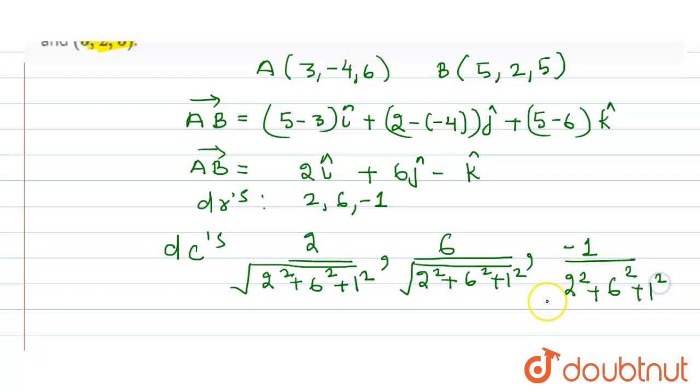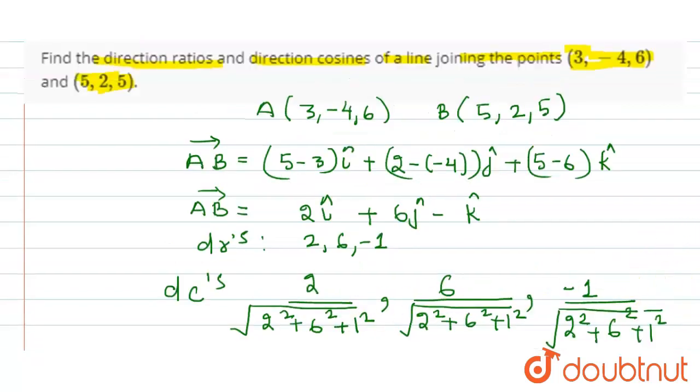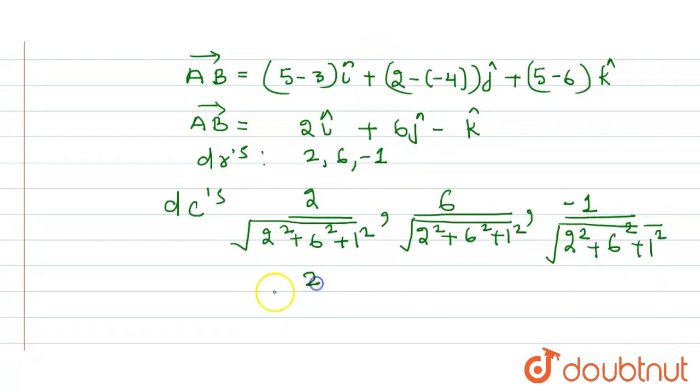So let us calculate the value. That will become equal to 2 upon—2 squared is 4, 4 plus 36 plus 1, square root. So after simplification it will become